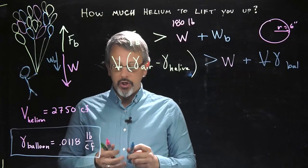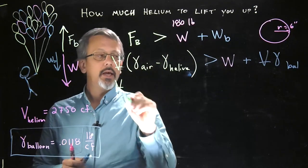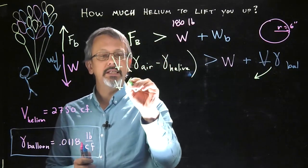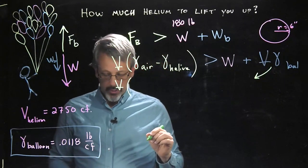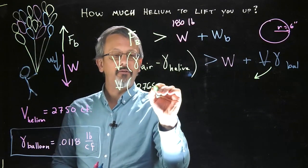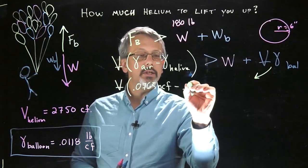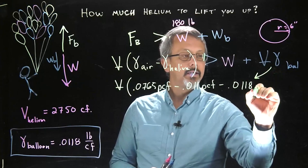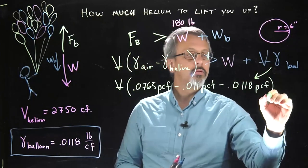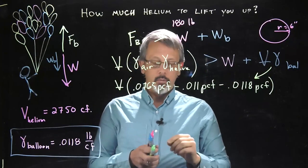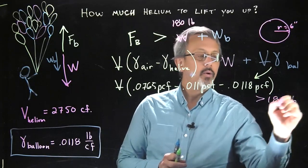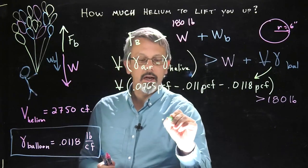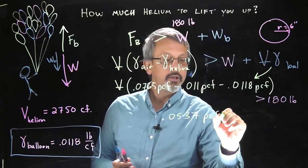So now it's just a matter of plugging in our numbers. Notice our unknown here is still this volume. And if I do a little manipulation, I'm probably going to want to take this value here and move it to the other side of the equation so we can compare it to the weight. So now I have a series of specific weights that I can go ahead and put in here. We have our 0.0765 PCF for air, our 0.011 PCF for helium. We're going to subtract our 0.0118 PCF for our balloon. All of that's multiplied by our volume, and we want all of that to be greater than our 180-pound weight that we're trying to lift to float away. If we work through all of that, we get a value of 0.0537 PCF times our volume.